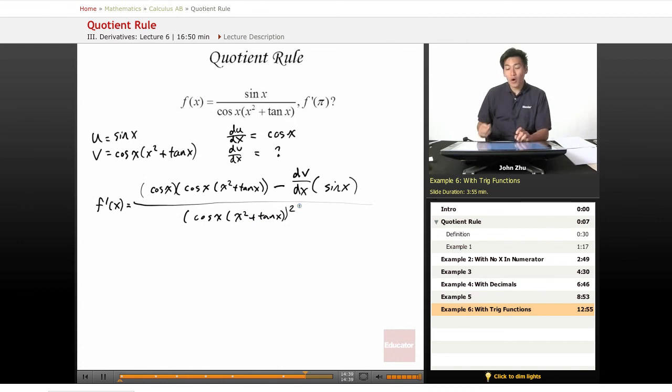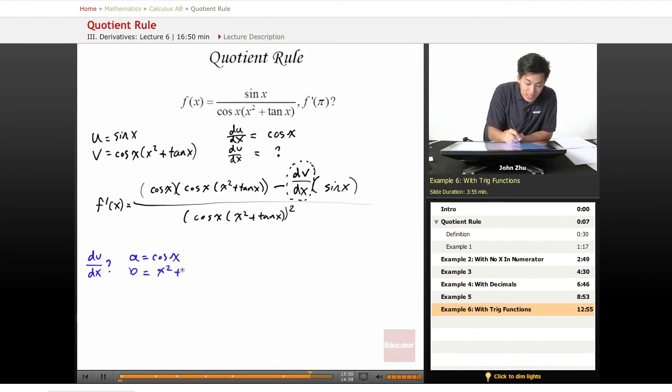So now all we're left to do is to find this dv dx term. We can find dv dx by letting our a equals cosine of x, and our b equals x squared plus tangent of x.